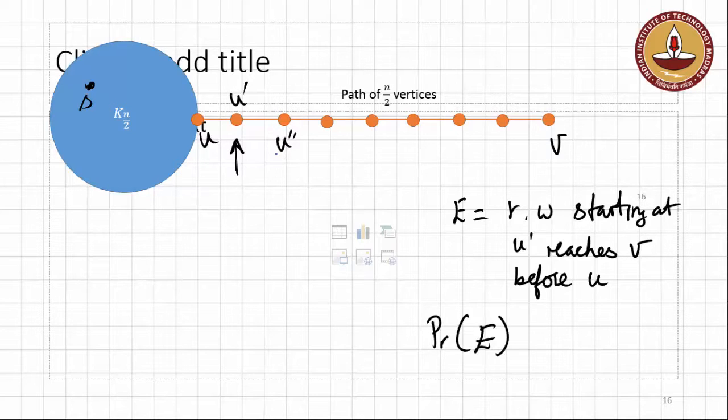Now that you've reached U', now ask the question, will we reach U first, or will we reach this vertex, say, U*? And this again, these are two symmetric events, the event of reaching U or the event of reaching U*. So that again, the probability that you go here before you go to U is again another half.